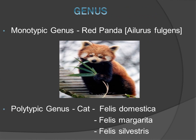Regarding genus: a genus may consist of only one species, called a monotypic genus. For example, red panda (scientific name Ailurus fulgens) — only the species fulgens comes under genus Ailurus. A polytypic genus consists of multiple species. For example, genus Felis includes three species: Felis domestica (domestic cat), Felis margarita (jungle cat), and Felis silvestris (wild cat).